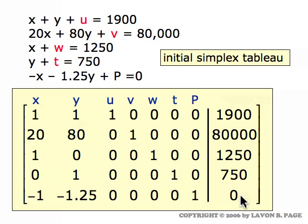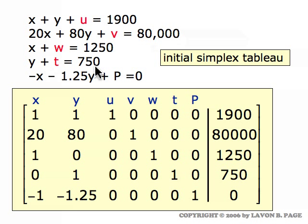Let's check a couple of those rows. The second row came from the wood equation: 20X coefficient, 80Y coefficient, 1V coefficient, and no U, W, T, or P terms, so those are all zeros, with 80,000 on the right. Similarly, Y plus T equals 750 gives 1Y and 1T with all other coefficients zero and 750 on the right. The last row from the profit equation gives minus 1 for X, minus 1.25 for Y, plus 1 for P, zeros elsewhere, and zero on the right.